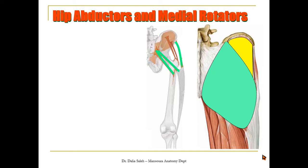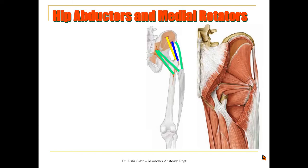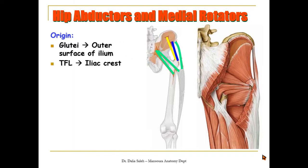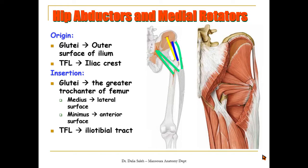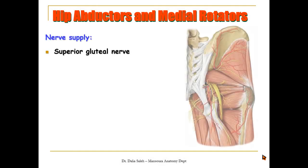The tensor fasciae latae extends from the iliac crest to the iliotibial tract. In a deeper plane, the gluteus medius extends from the lateral surface of the ilium to the greater trochanter of the femur. Deep to it lies the gluteus minimus, which also extends from the lateral surface of the ilium to the greater trochanter. So the origin of the hip abductors — gluteus medius and minimus — is from the outer surface of the ilium, while tensor fasciae latae originates from the iliac crest. The glutei insert into the greater trochanter: gluteus medius on its lateral surface and gluteus minimus on its anterior surface; tensor fasciae latae inserts into the iliotibial tract.